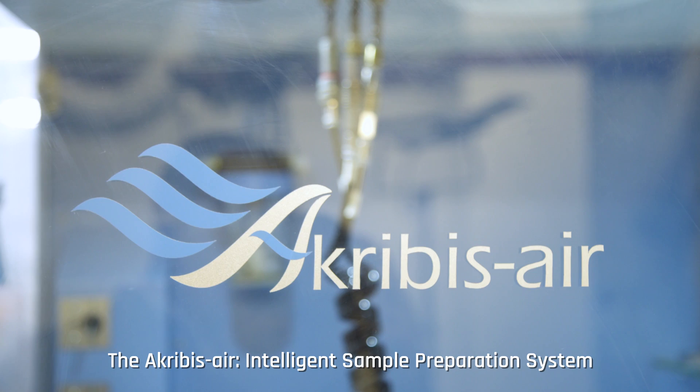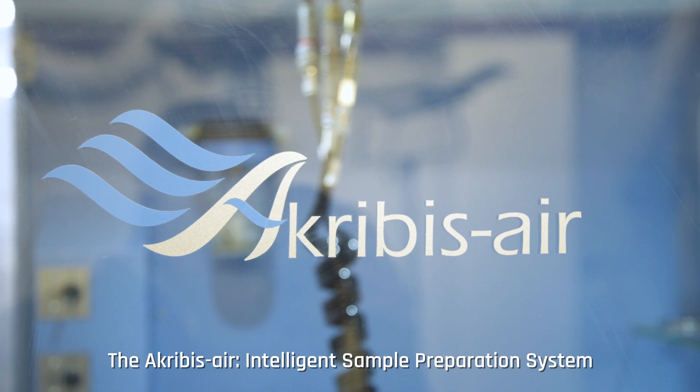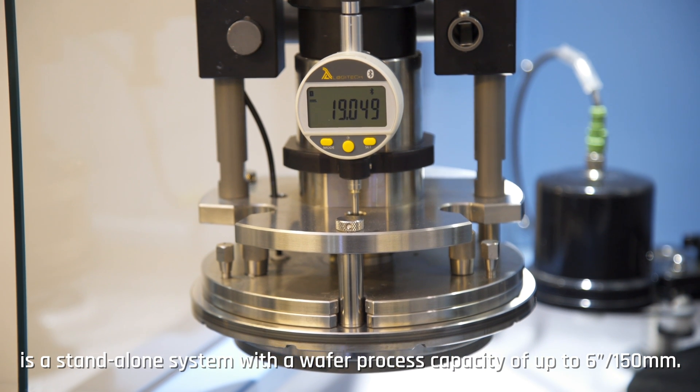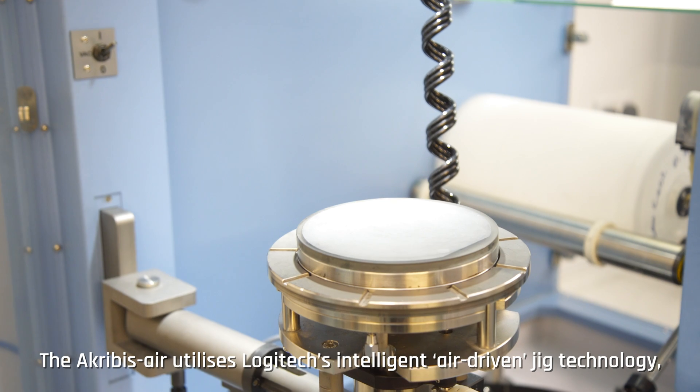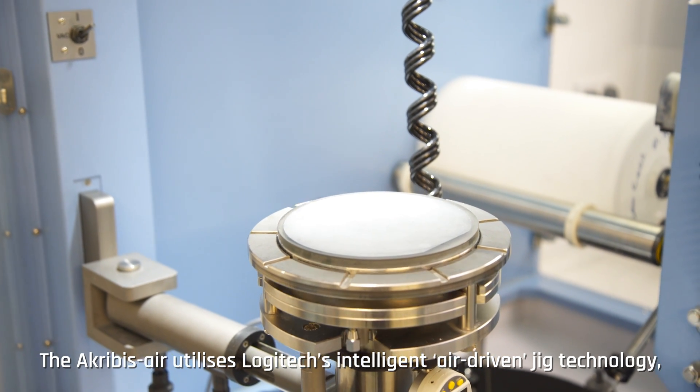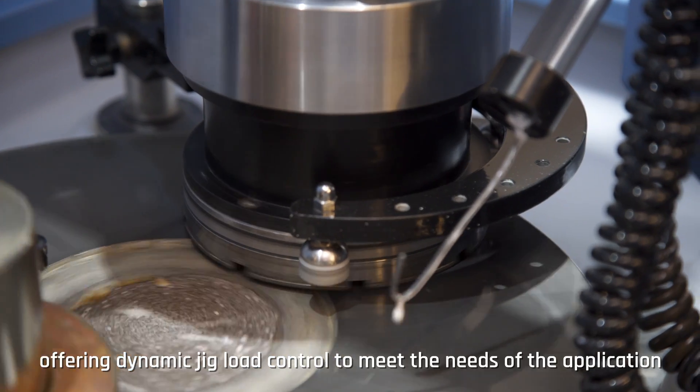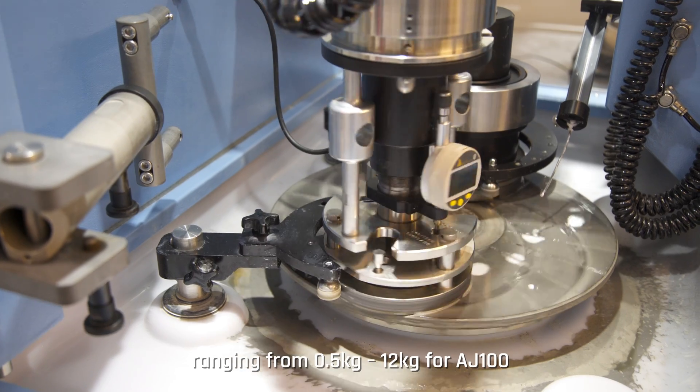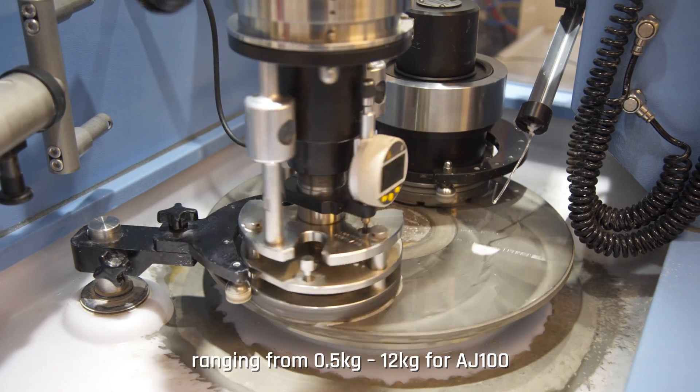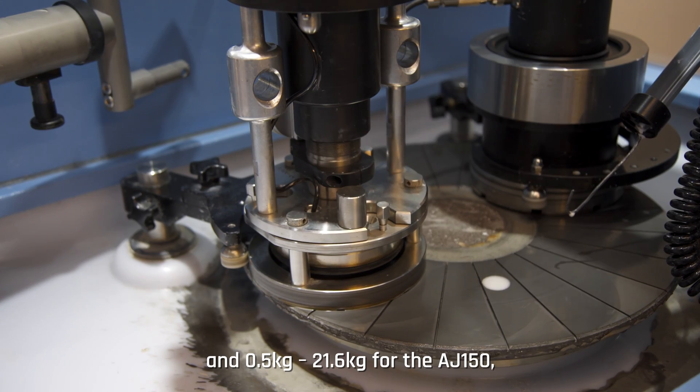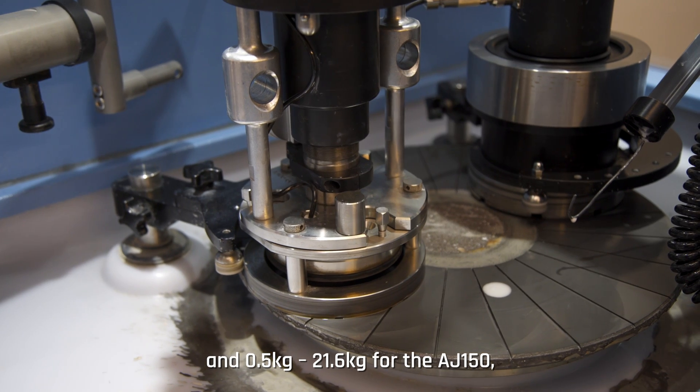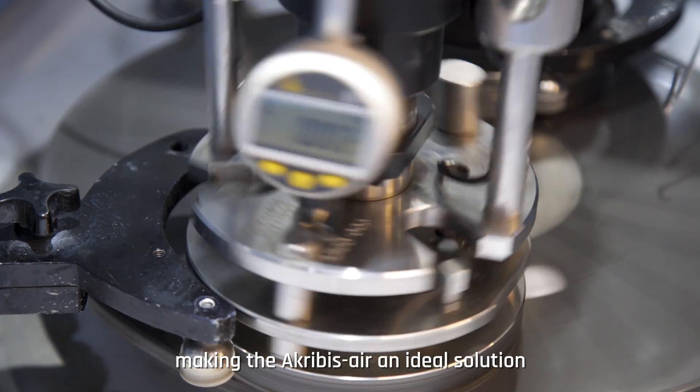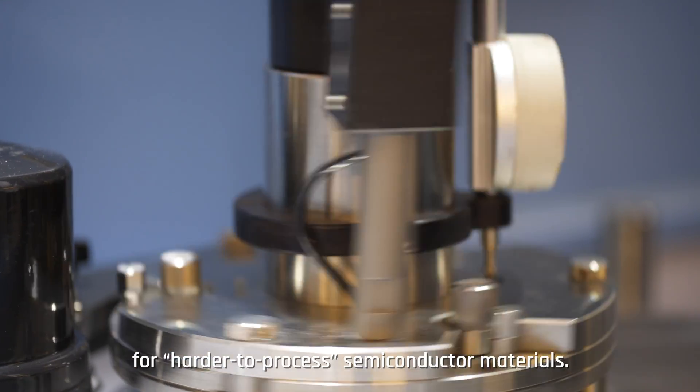The Acrobus air intelligent sample preparation system is a standalone system with a wafer process capacity of up to 150 millimeters. The Acrobus air utilizes Logitech's intelligent air driven jig technology, offering a dynamic jig load control to meet the needs of the application ranging from 0.5 kilograms to 12 kilograms for AJ100 and 0.5 kilograms to 21.6 kilograms for the AJ150, making the Acrobus air an ideal solution for harder to process semiconductor materials.